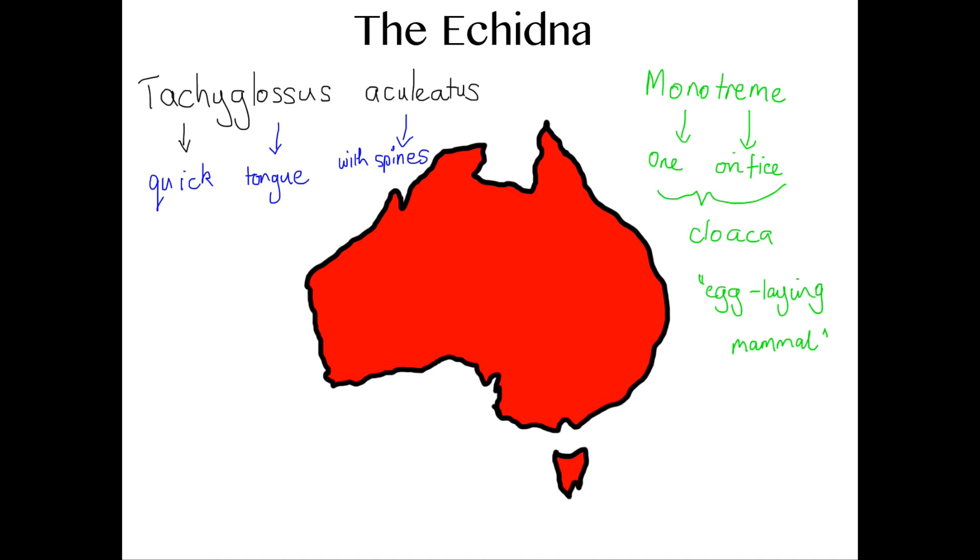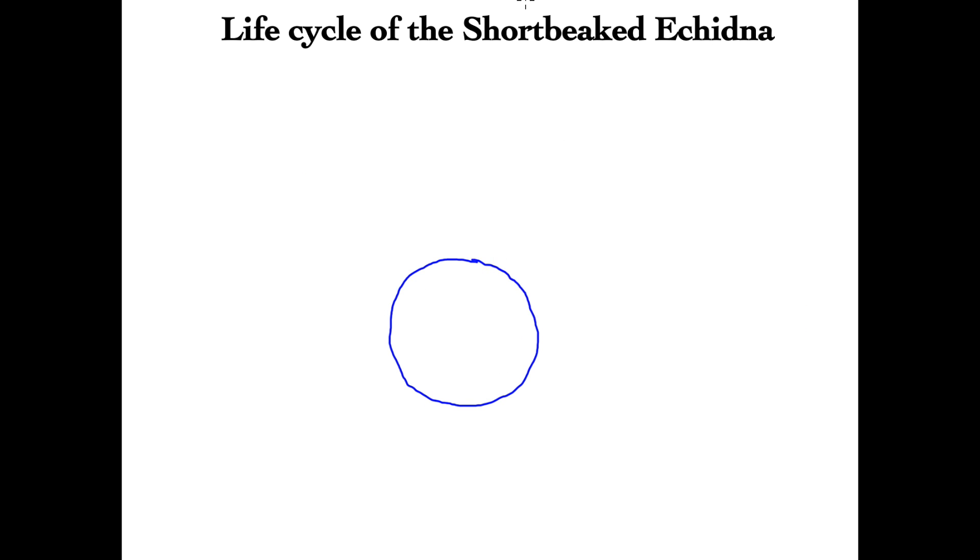This little egg-laying mammal was a pretty unique discovery back in 1884 when they found the first egg specimen. The first European scientist to discover it actually managed to squash the specimen in his hands because he wasn't prepared for the fragility of the egg.